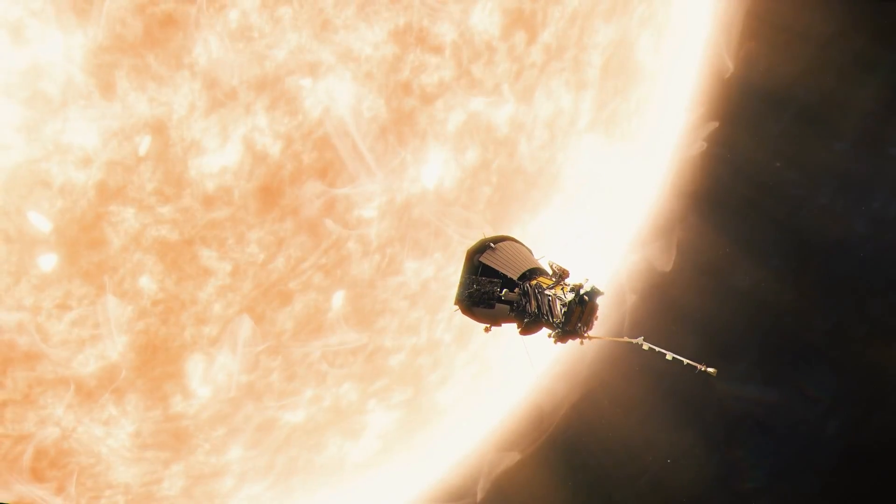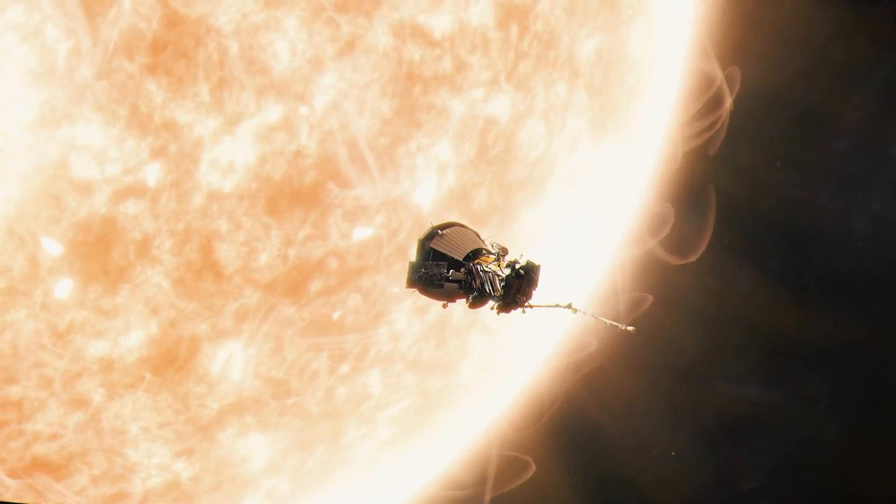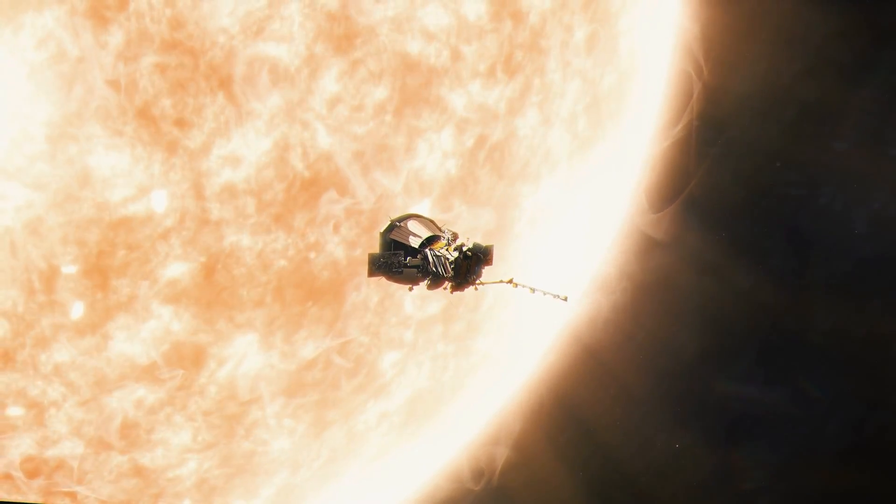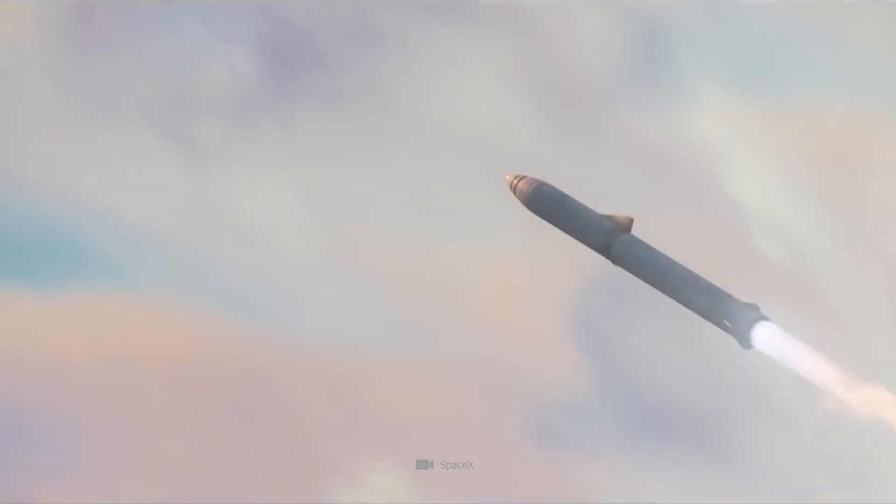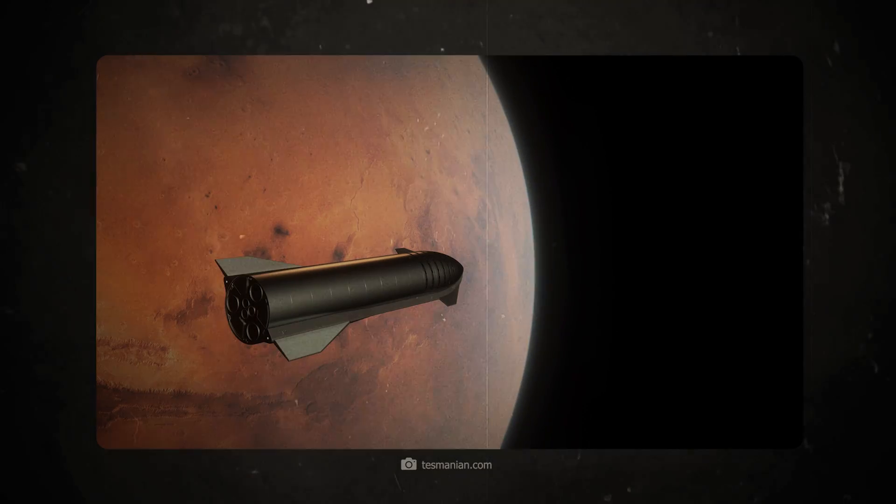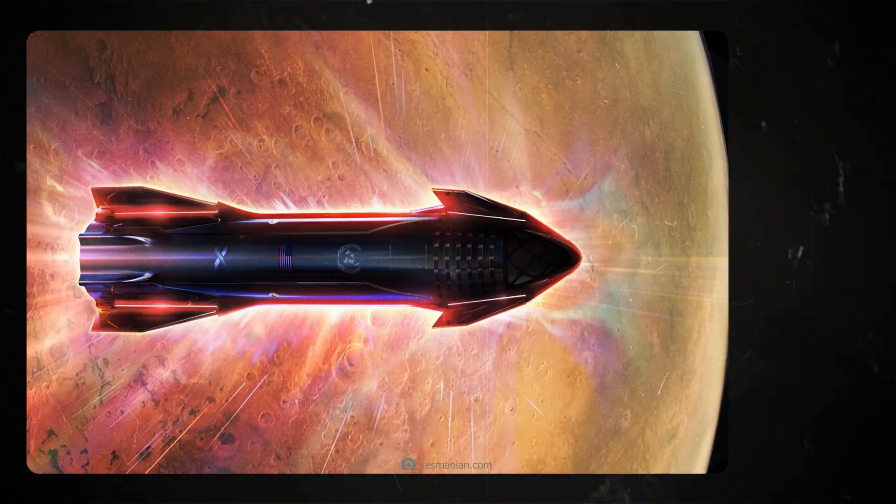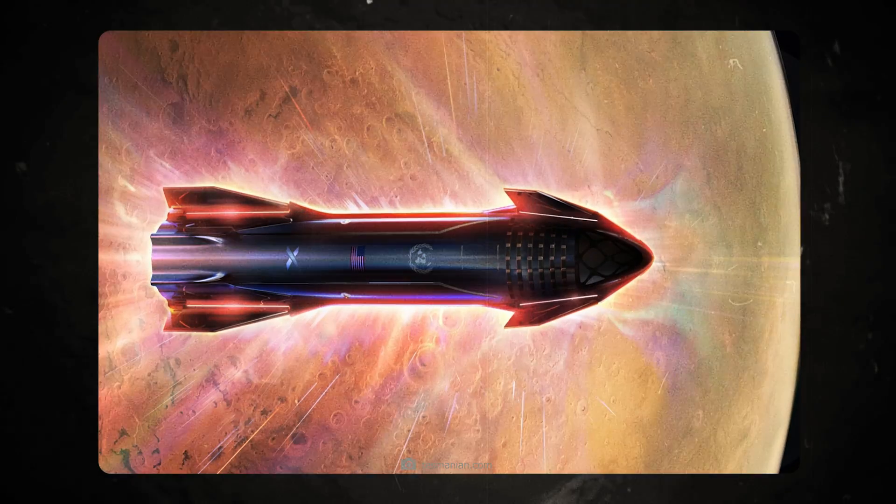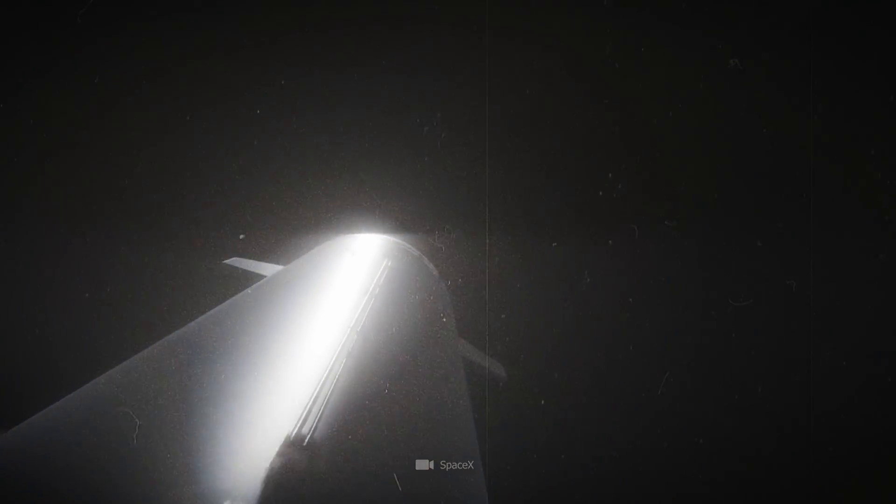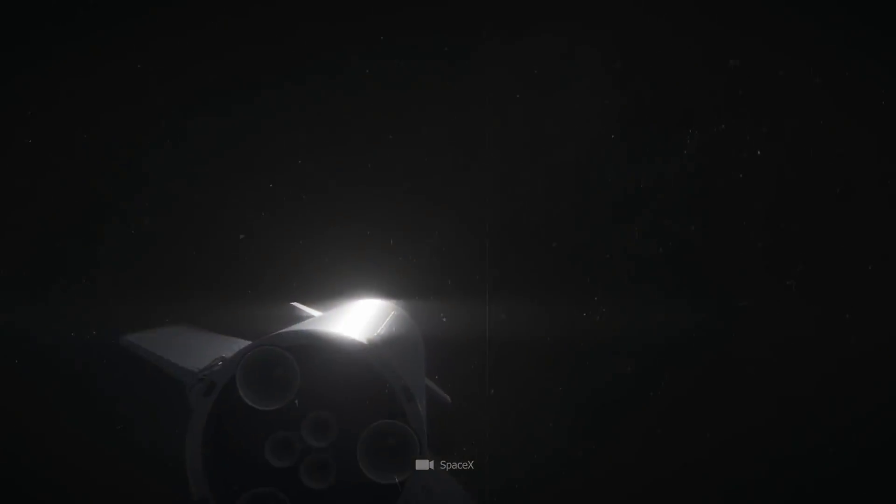The fastest spacecraft ever built by humans is currently the Parker Solar Probe which is traveling at 700,000 kilometers per hour and Elon Musk's spaceships are traveling at 27,000 kilometers per hour. The first Mars settlers will have to wait around six months in the spacious and comfortable starships before they reach their destination. This technology is already considered to be extremely advanced.